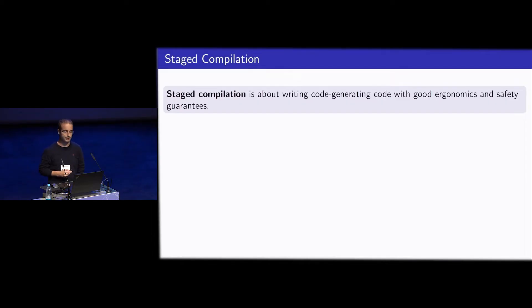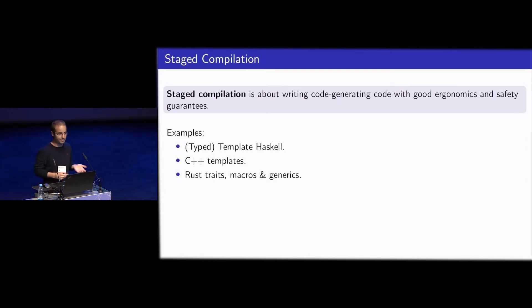Hello everyone. I'm Andres Kovac and this is going to be a talk about staged compilation with two-level type theory. So what is staged compilation? It is about writing code generating code with good ergonomics and safety guarantees. And there are many examples for the existing infrastructure like this. We have type template Haskell or just template Haskell, we have C++ templates, we have traits, macros and generics in Rust.